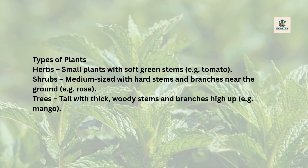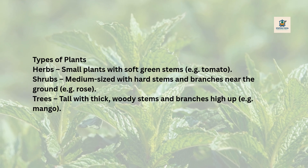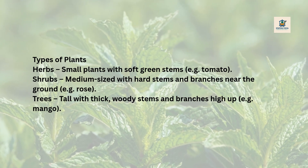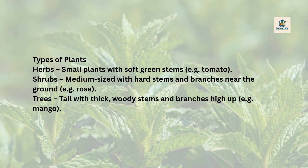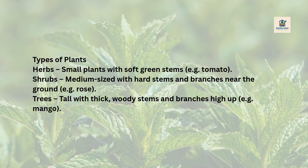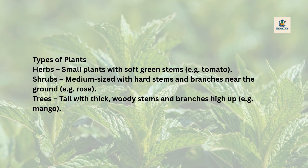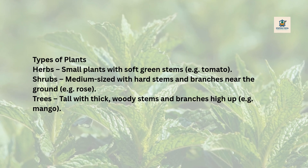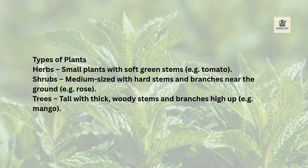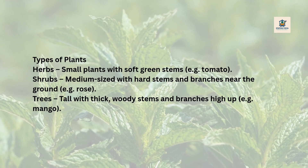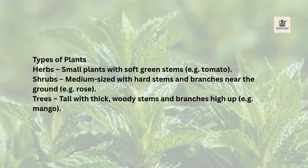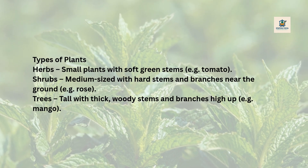Types of plants. Herbs: small plants with soft green stems, e.g. tomato. Shrubs: medium-sized with hard stems and branches near the ground, e.g. rose. Trees: tall with thick, woody stems and branches high up, e.g. mango.